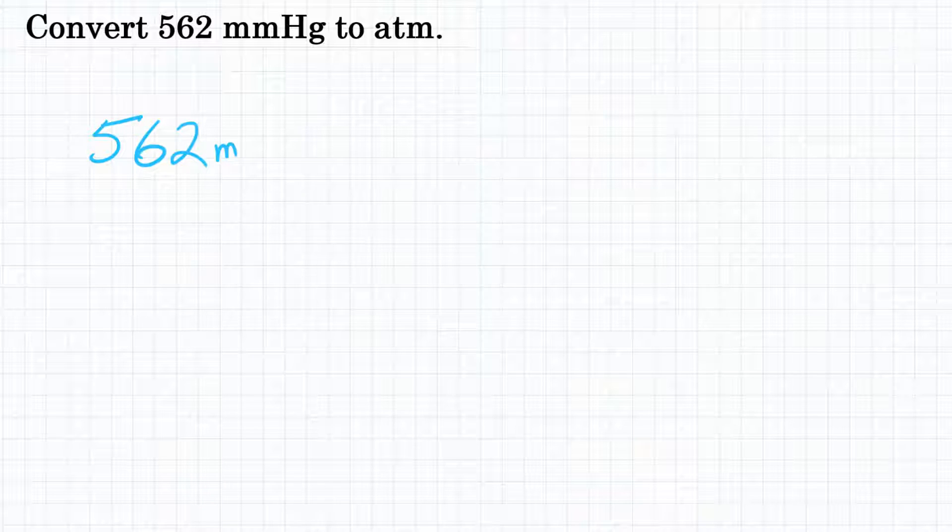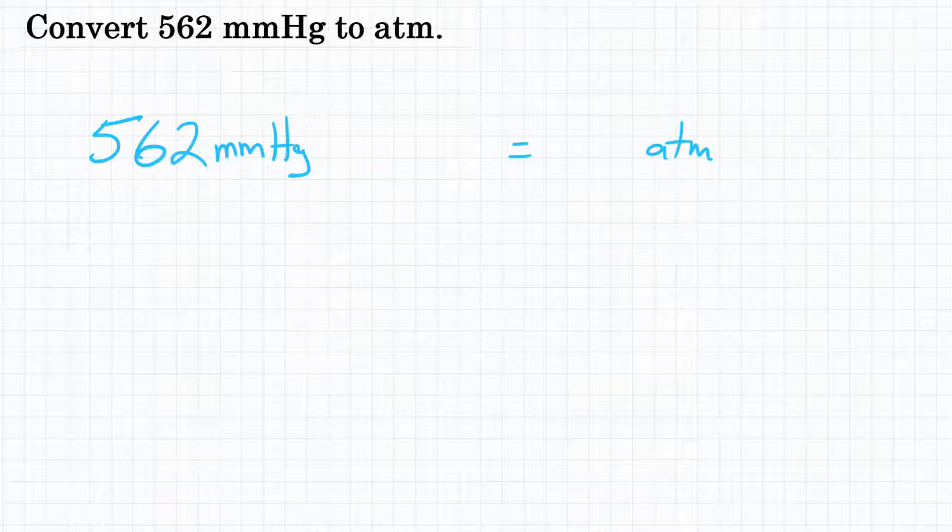562 millimeters of mercury and we want to convert that to so many atmospheres. To do that using dimensional analysis, we're going to multiply by a fraction which we call our conversion factor.